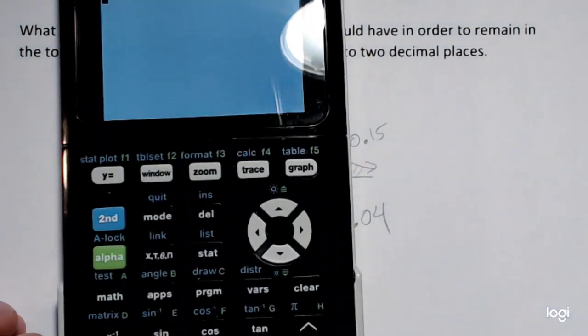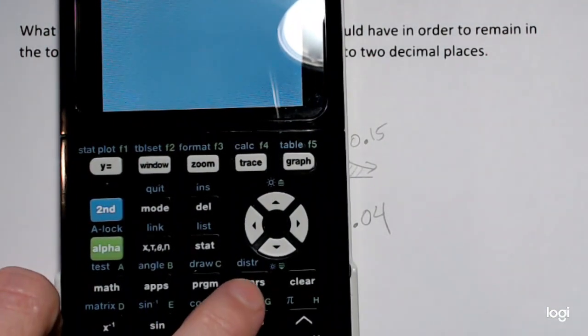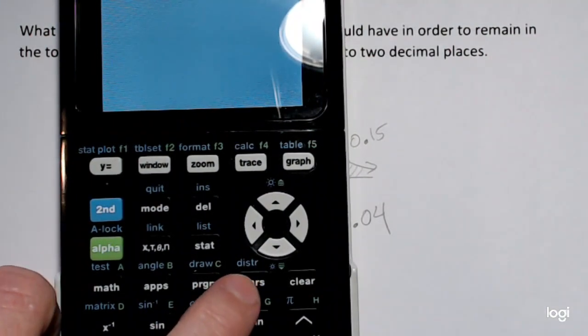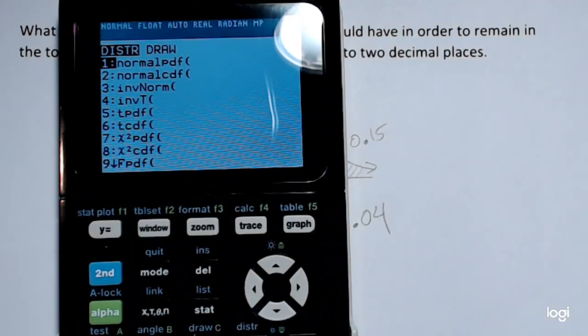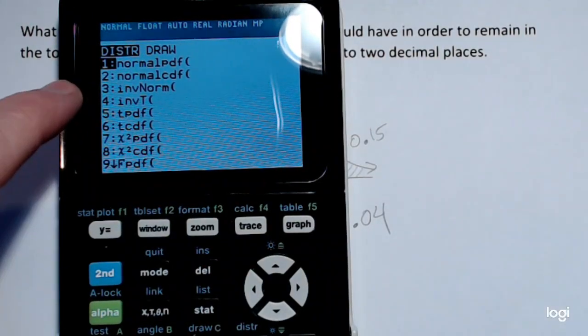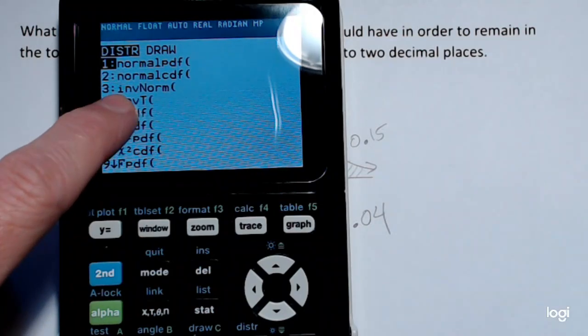So going to my distribution menu, it's the second key. See this D-I-S-T-R. And under the normal CDF is the inverse normal.